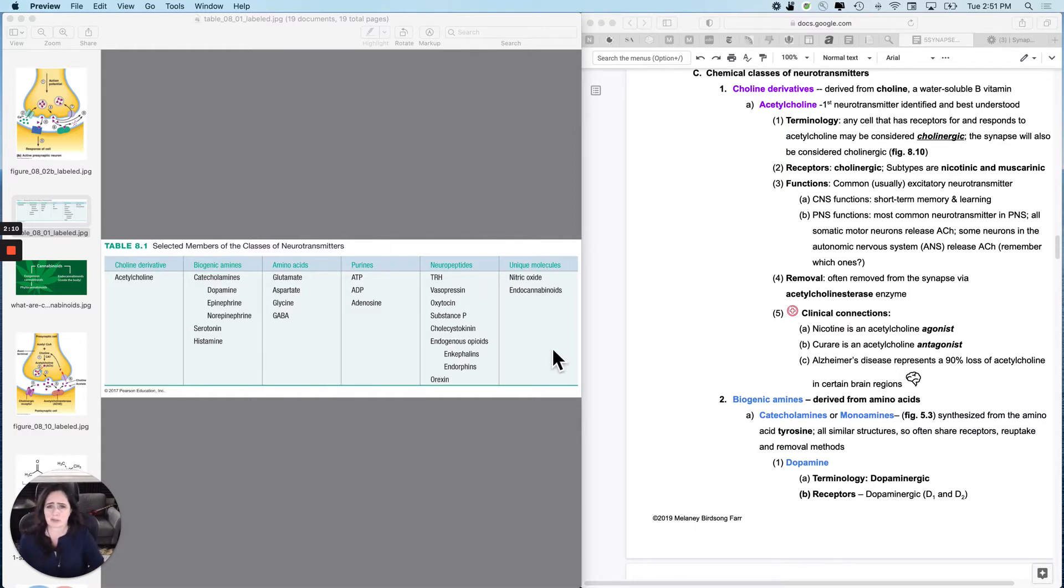And then there's just some weird molecules that don't seem like they would be a neurotransmitter at all, but are. So, let's start talking about the first set, which are the choline derivatives. And really, that's just acetylcholine.